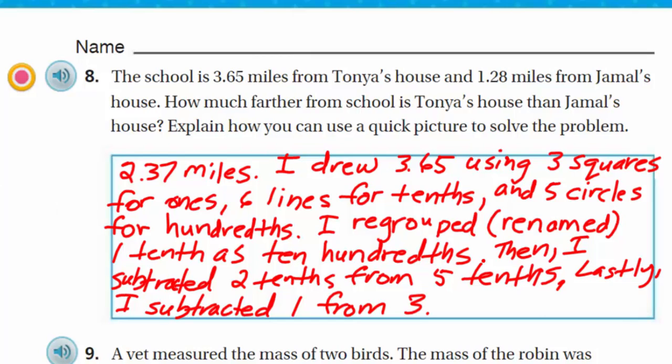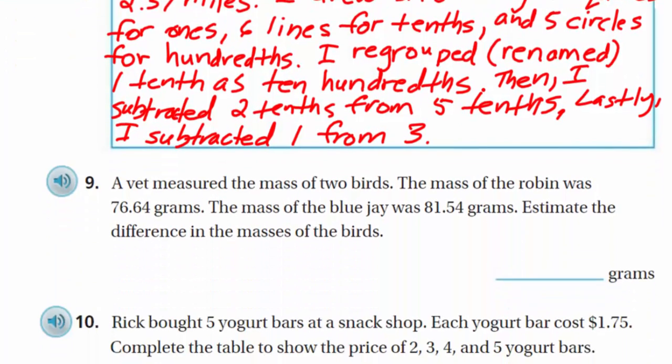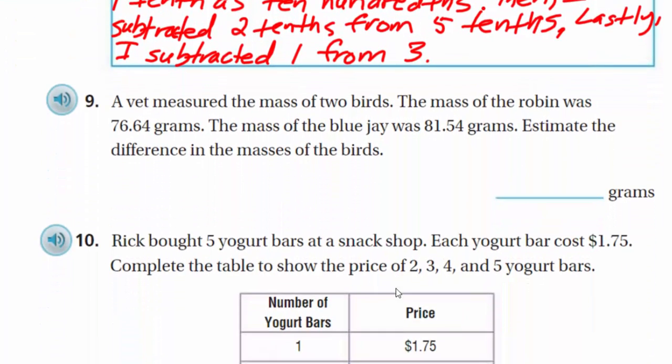It's a little, I had to make it all fit here. You can see that up here I actually regrouped the one-tenth over here into ten hundredths. And I just subtracted it in a different order. But I think that makes sense. Okie dokie. Let's move on, my friends. It says here, a vet measured the mass of two birds. The mass of the robin was 76.64 grams. The mass of the blue jay was 81.54 grams. Estimate the difference in the masses of the birds.